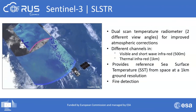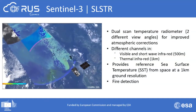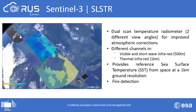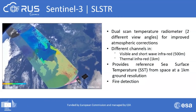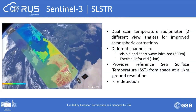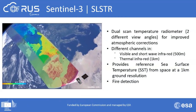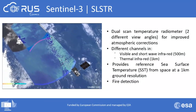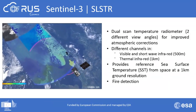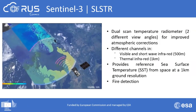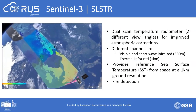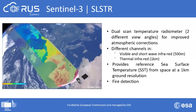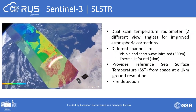The second payload, SLSTR, is a dual-scan temperature radiometer with two different view angles for improved atmospheric corrections. It has channels in the visible and shortwave infrared at half a kilometer ground resolution, and additional channels in the thermal infrared at one kilometer ground resolution. Its main objective is to provide reference sea surface temperature (SST) from space at one kilometer resolution, and one of its key applications is active fire detection.